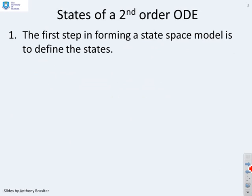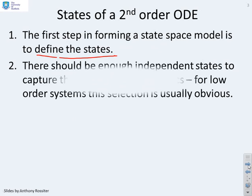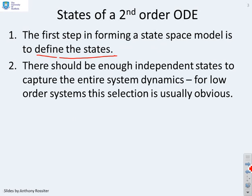The first step in forming a state-space model is to define the states. So what are you going to choose the states to be? Usually that's obvious but it won't always be the case. Now there needs to be enough independent states to capture the entire system dynamics. For low-order systems the selection of the states is usually obvious.